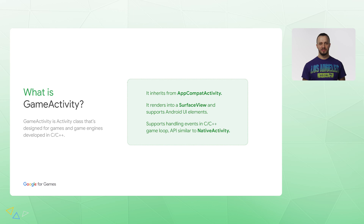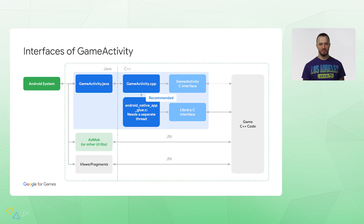GameActivity is a class that's designed for games but can be used by any native code applications. It provides convenient access to Android APIs, as well as access to a richer set of Android UI components like the AndroidX Fragment component. It helps application control the rendering surface, absorb configuration changes, and interact with the system. There are several ways of interaction between the game and the system: using GameActivity.h callbacks and APIs, using native App Glue callbacks in a separate thread for a more flexible approach, using additional libraries, or using JNI to implement your own native code interfaces.